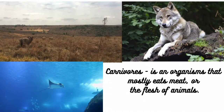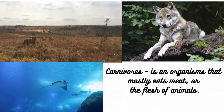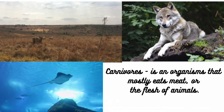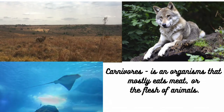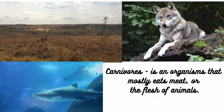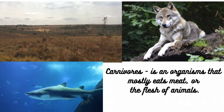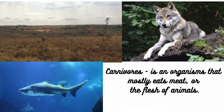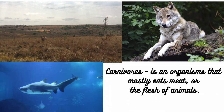A carnivore is an organism that mostly eats meat, or the flesh of animals. Sometimes carnivores are called predators. Organisms that carnivores hunt are called prey.